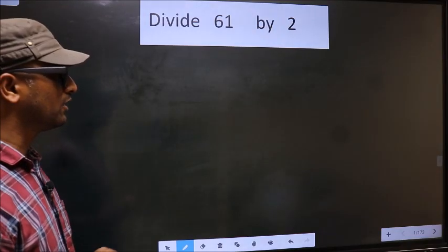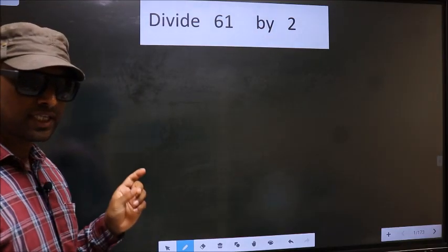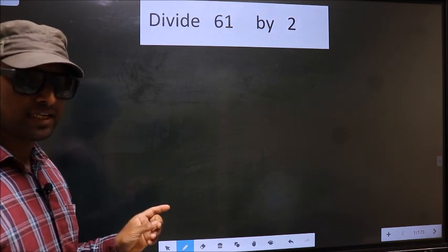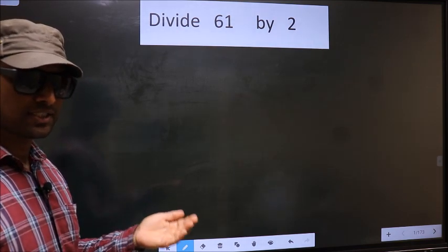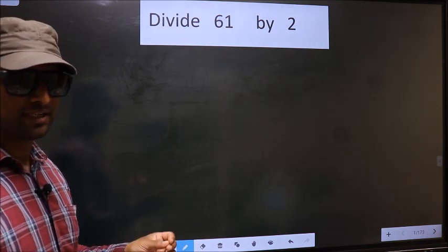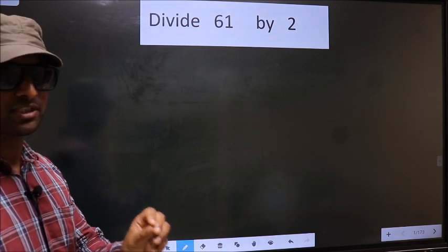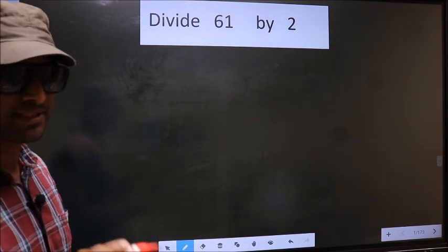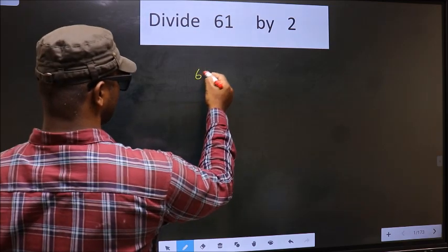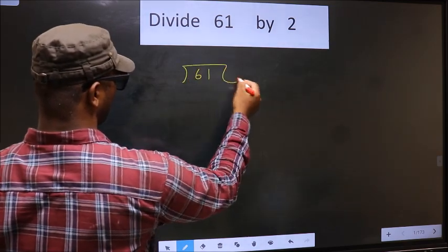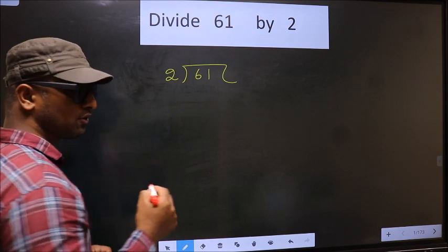Divide 61 by 2. While doing this division, many do this mistake. What is the mistake that they do? I will tell. But before that, first we should frame it in this way. That is 61, 2. Okay.